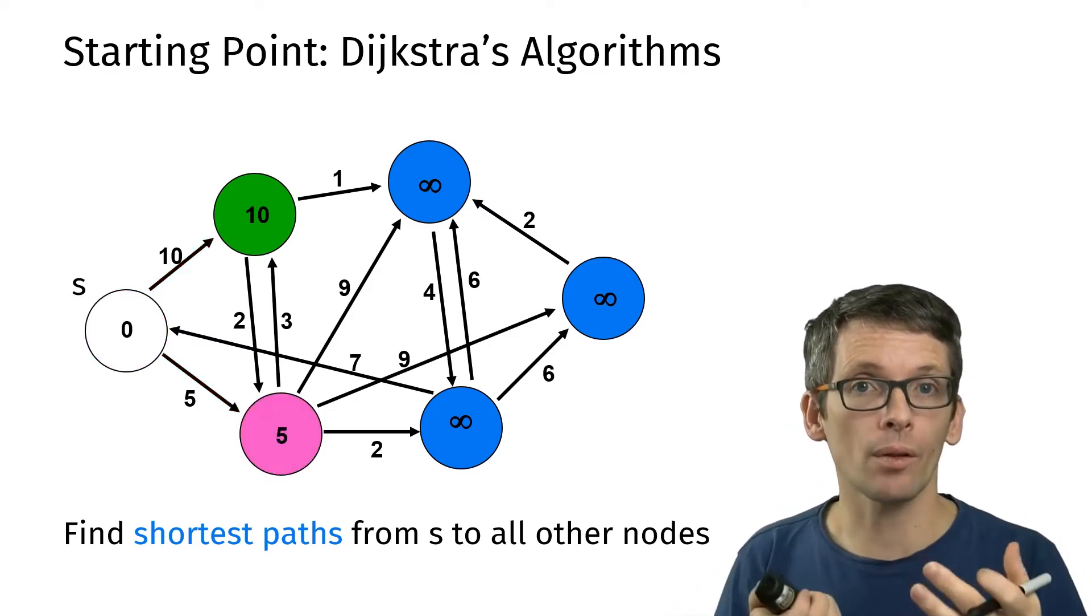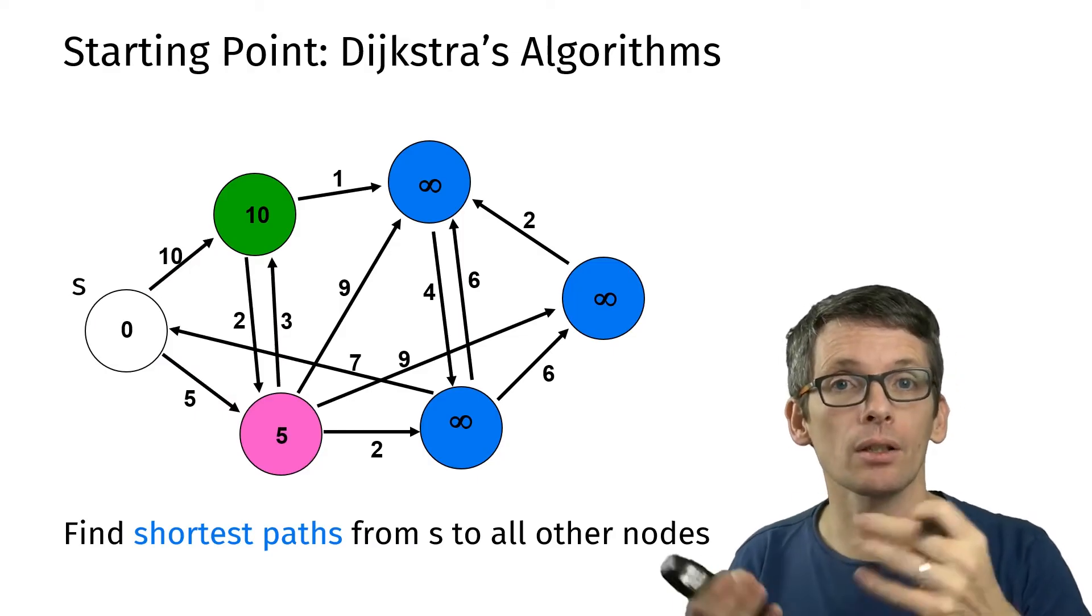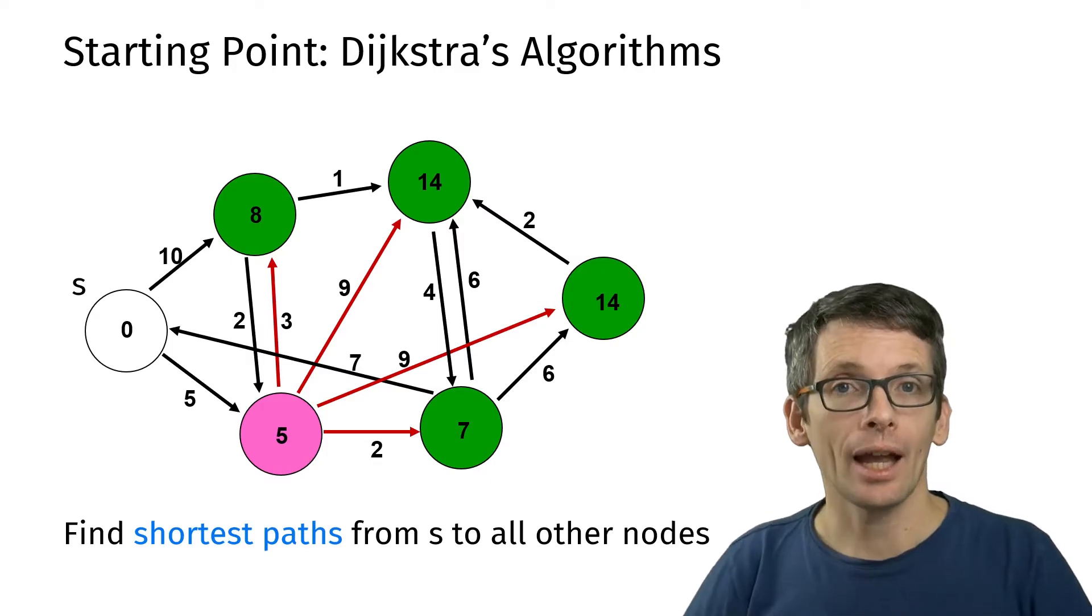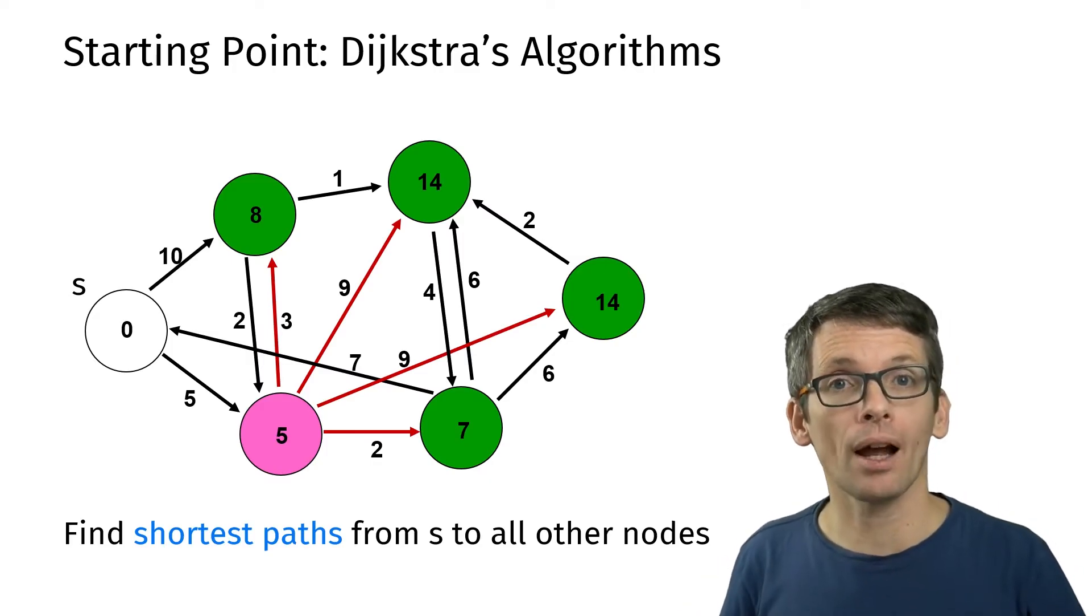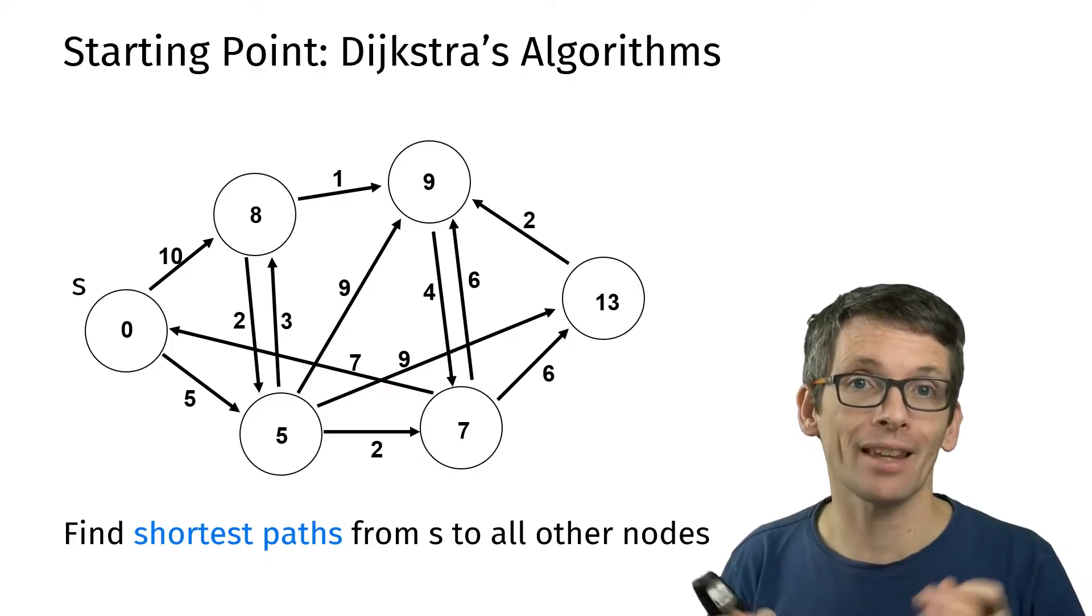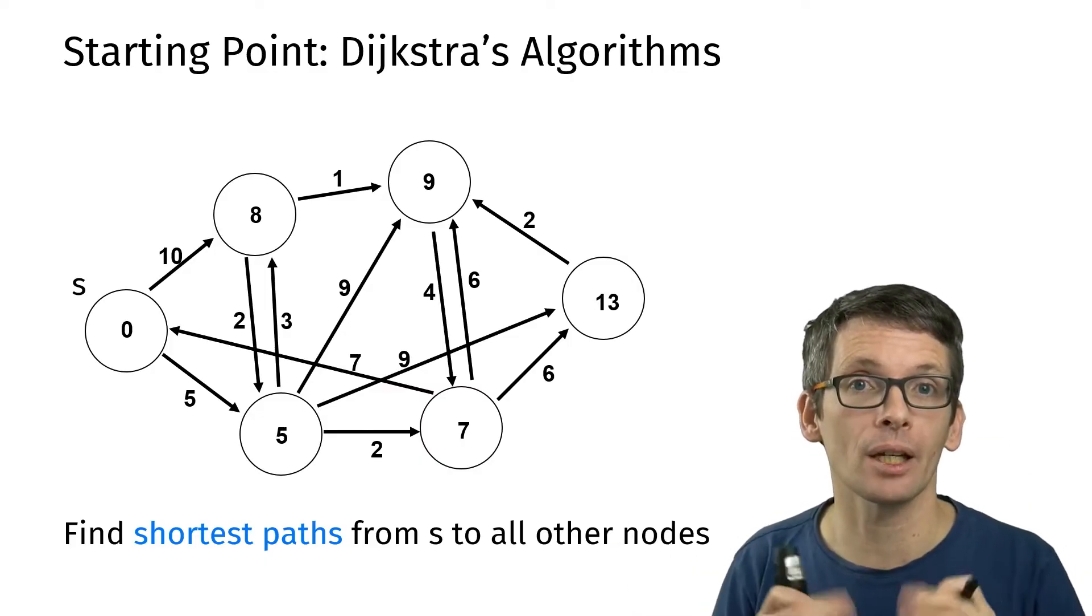We continue again with the one that currently has the smallest distance, so that's 5, and we look at its adjacent nodes, and so on. Eventually this will compute the shortest path from s to all other nodes. That was Dijkstra's algorithm in very short.